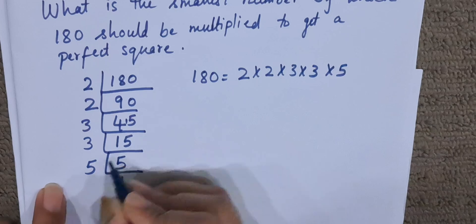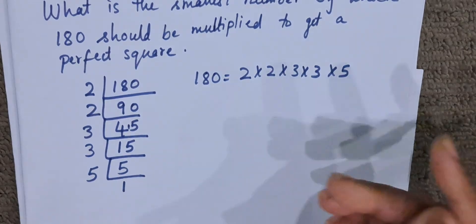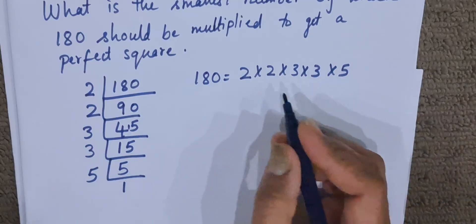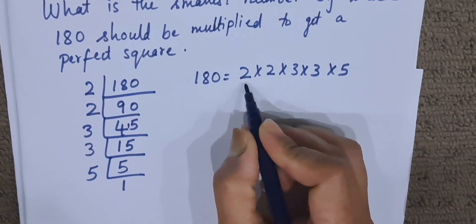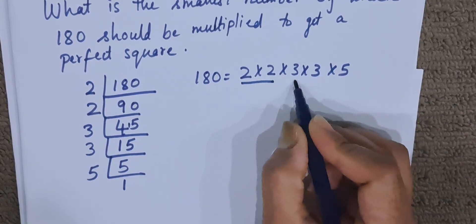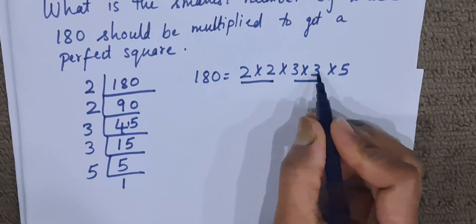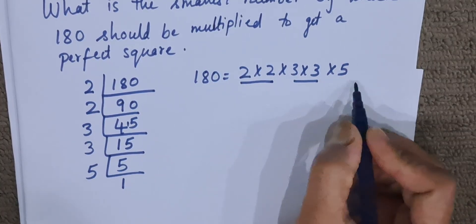So here, when we get these factors, what we have to do is make a pair. We have to take a pair, a set of 2 numbers, so that it becomes a perfect square. Now 2 × 2 is 2², 3 × 3 is 3². Now 5 is left alone.